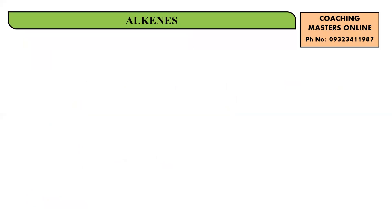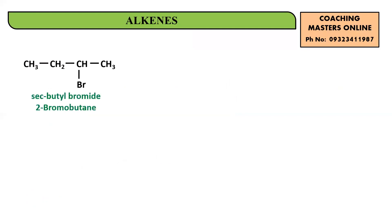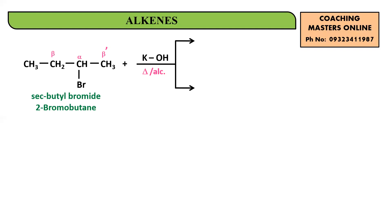Now let's take another example where we'll apply Zaitsev's rule. The compound is secondary butyl bromide — 2-bromobutane. Adding KOH in alcoholic conditions and heating. Bromine leaves from the alpha carbon (second carbon). But the beta and beta-dash carbons are not identical here, so two products are possible. From the beta carbon, H and OH give water; K and Br give KBr, yielding but-2-ene.